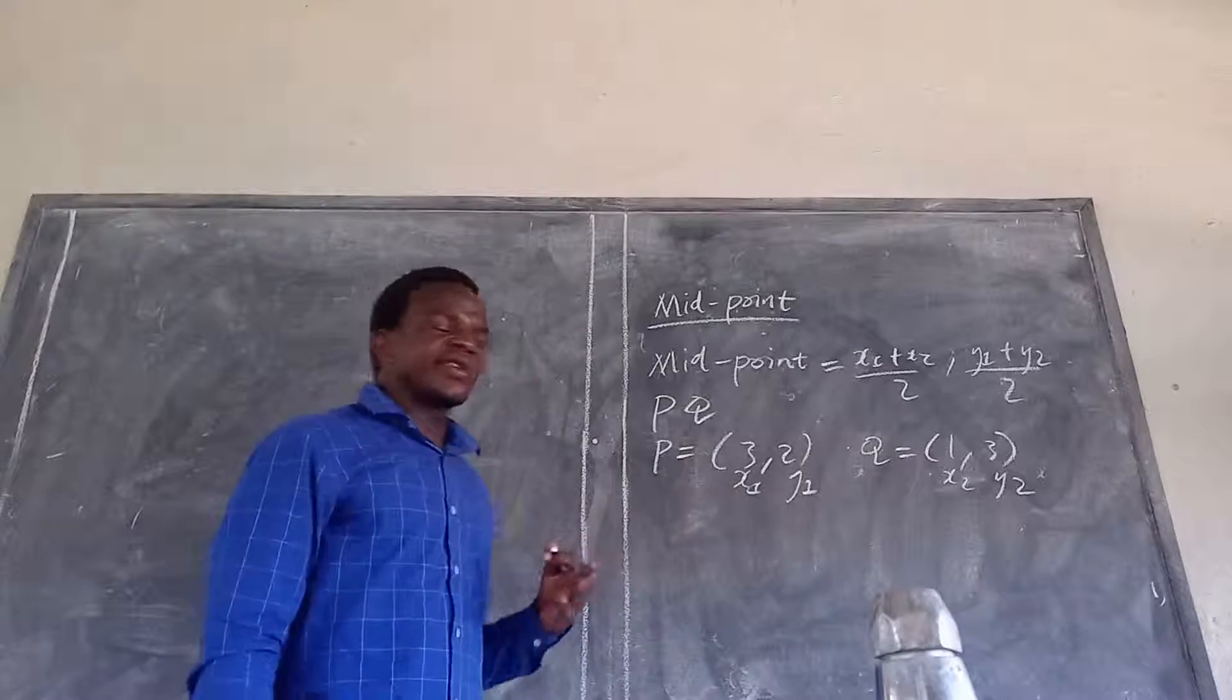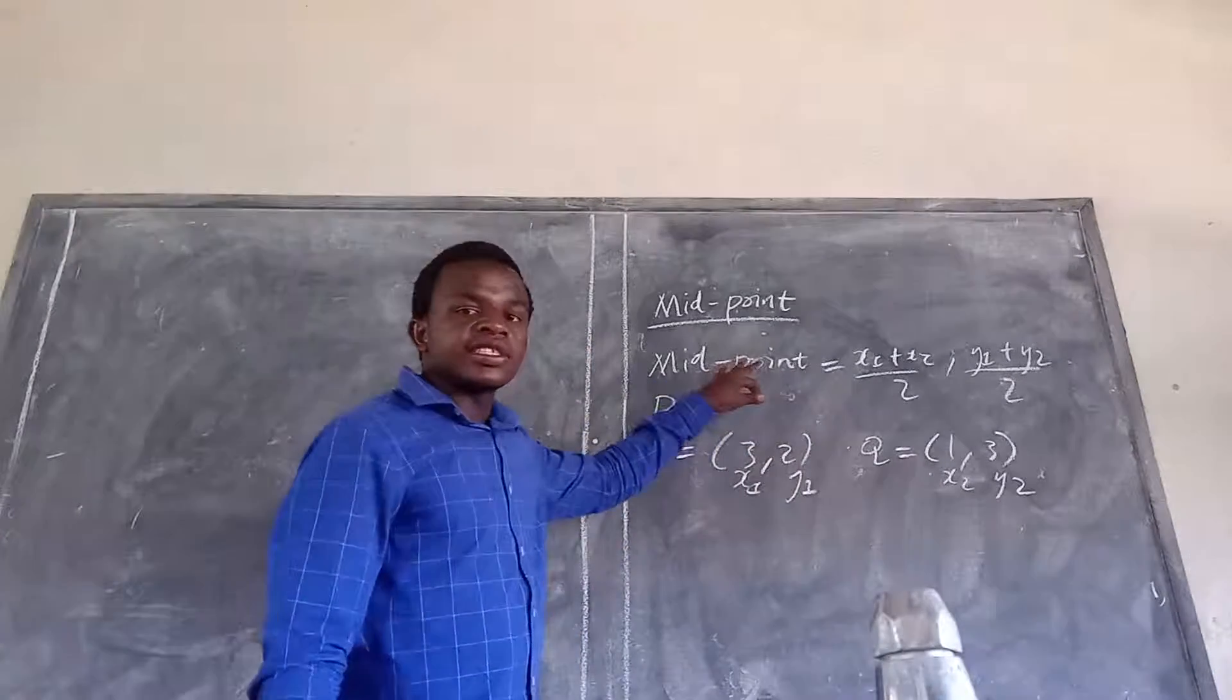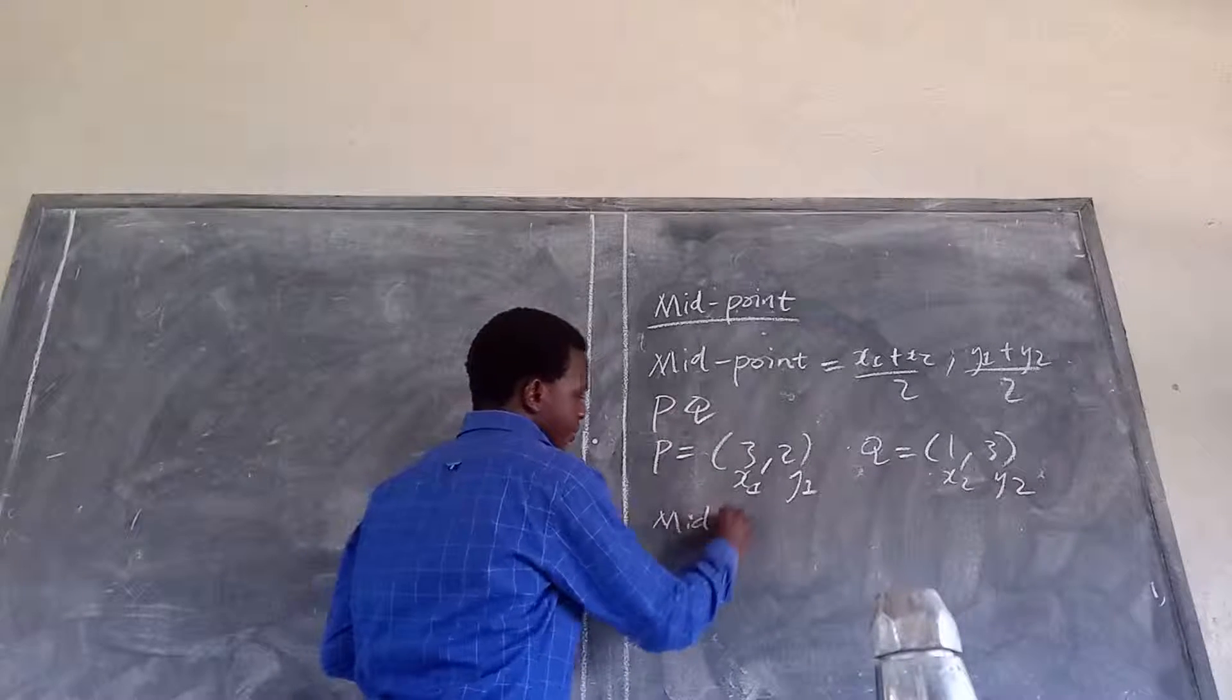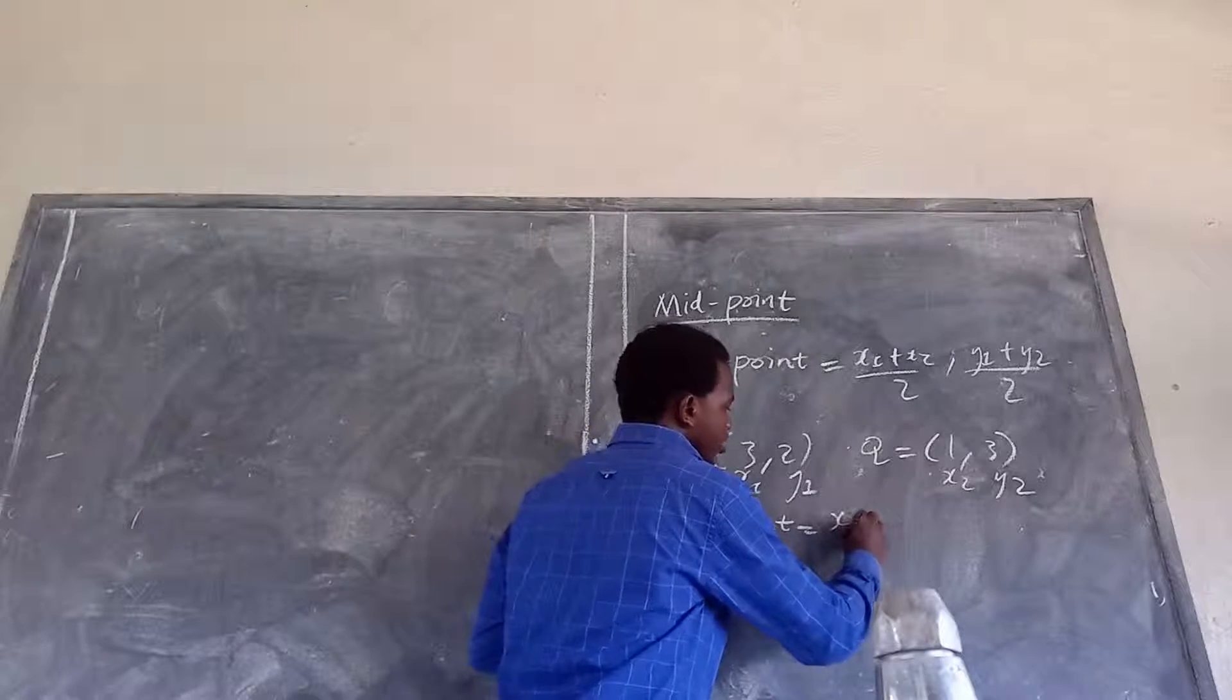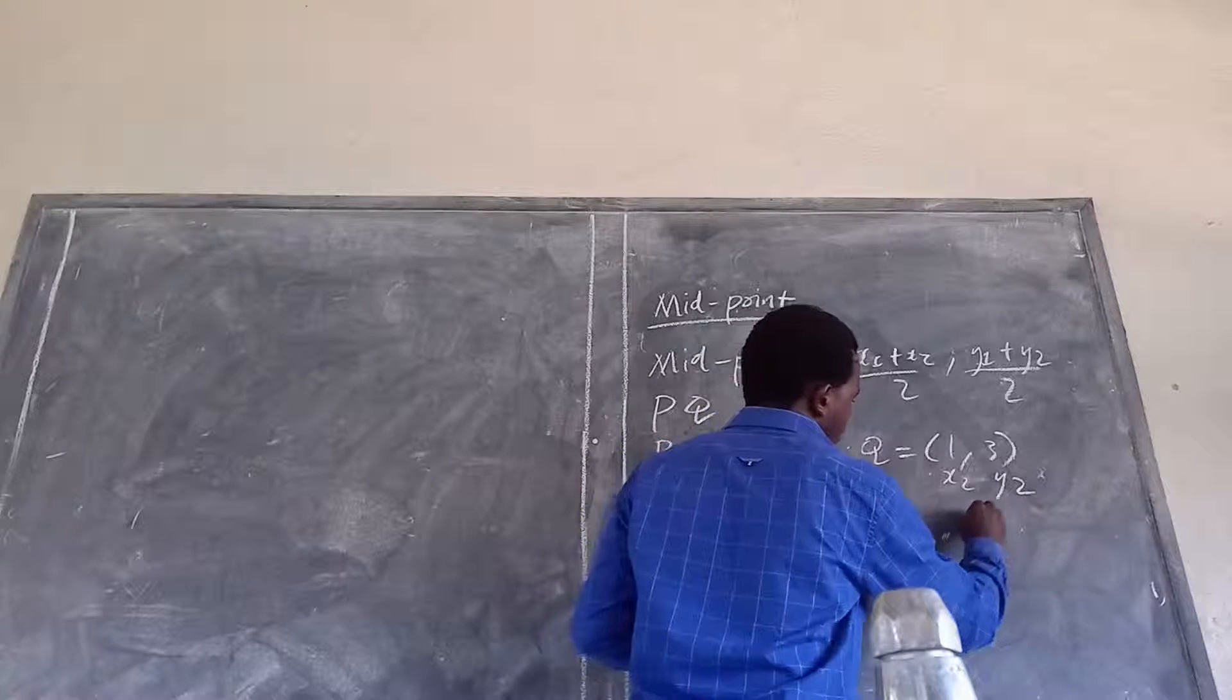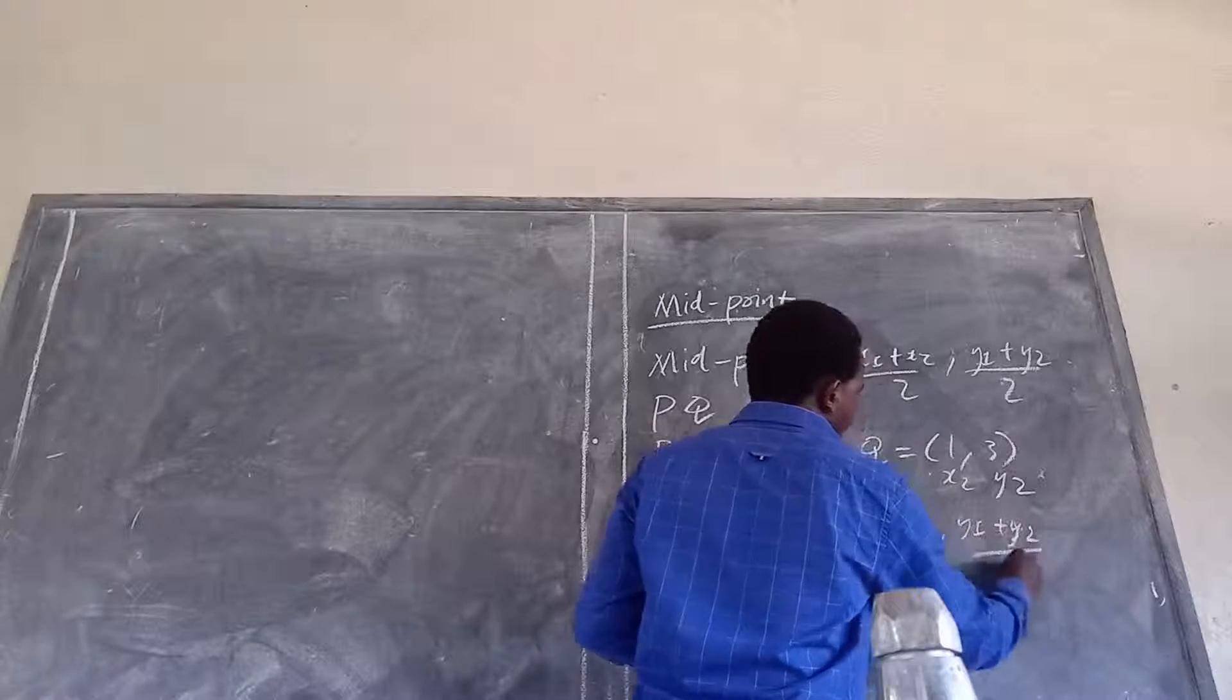you know that when you are calculating the midpoint of the straight line, you use this formula. So, the midpoint is equal to x1 plus x2 over 2 comma y1 plus y2 over 2.